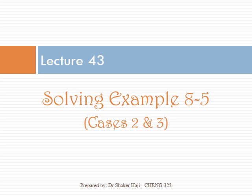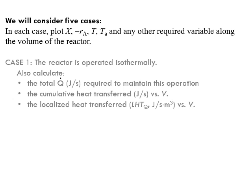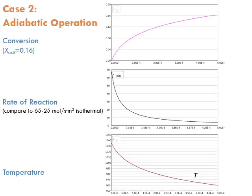Let's continue with Example 8.5. Today we're going to do Cases 2 and 3. Case 2: the reactor is operated adiabatically. When the reactor is operated adiabatically, all you have to do is put U equal to 0 and then use the dT/dV equation.